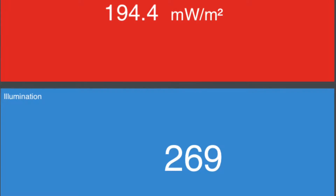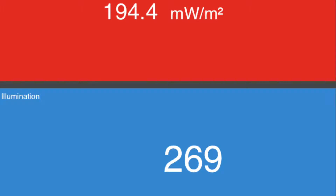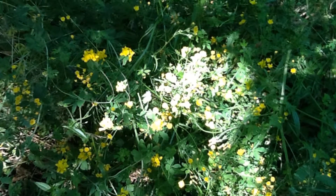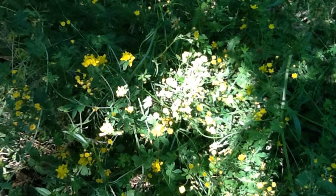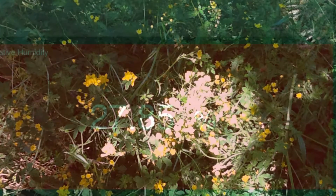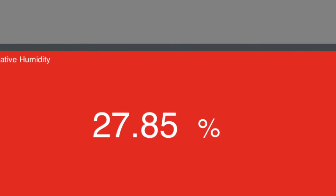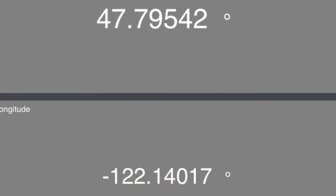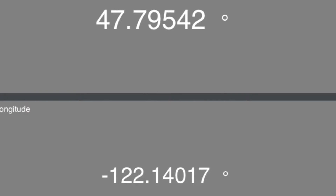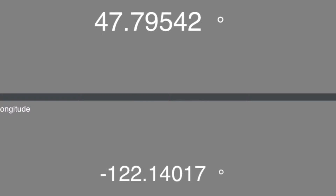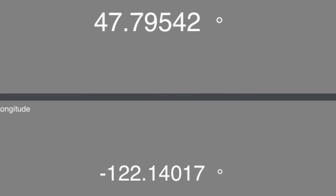The UVB intensity in the grasslands was 194.4 and the light intensity was 269. UV and light intensity are how much light gets in through the canopy if there is one. The relative humidity for the grasslands was 27.85. Coordinates for this grassland site were 47 latitude and negative 122.14 longitude.